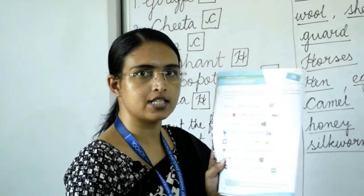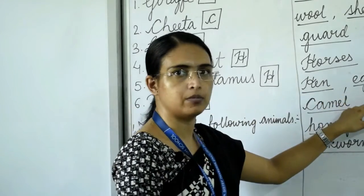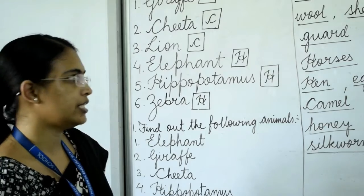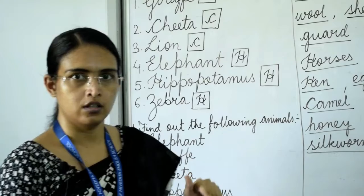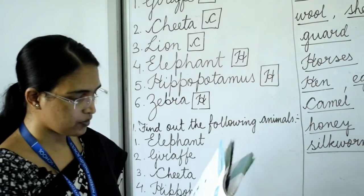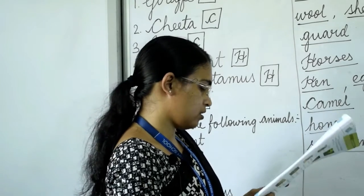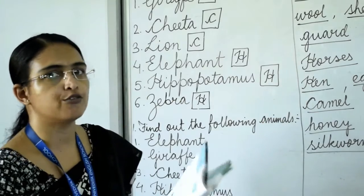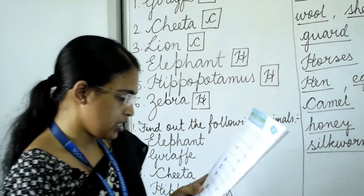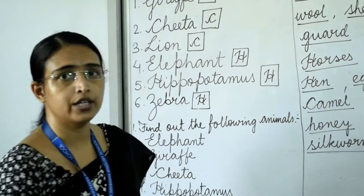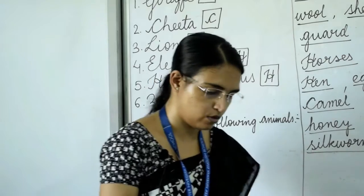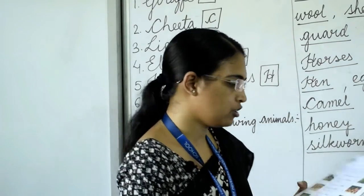Hen gives us eggs. Write hen in the first line and egg in the last line. Next: camel is used as transport in the desert — camel is the only animal that can walk on the desert. We get honey from bees, so write honey in the dash. Silk comes from silkworm, so write silkworm in the dash.